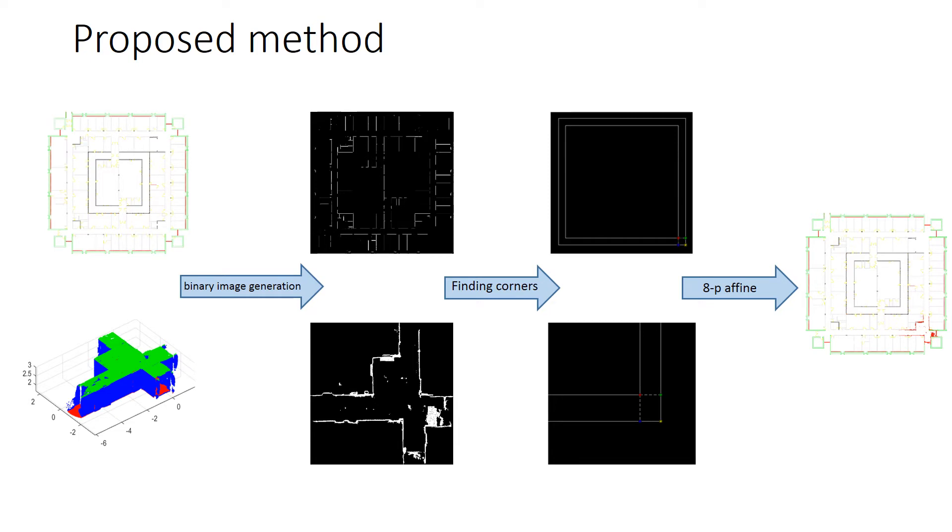As you can see here, as an overview, at the first stage, binary images are generated for each CAD models and point clouds coming from HoloLens. At the second stage, as you can see, at the left corner of each binary image correspondences can be found based on the nature of a floor plan.